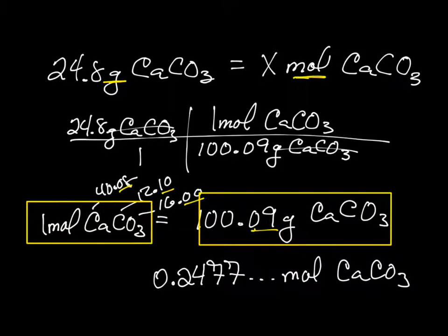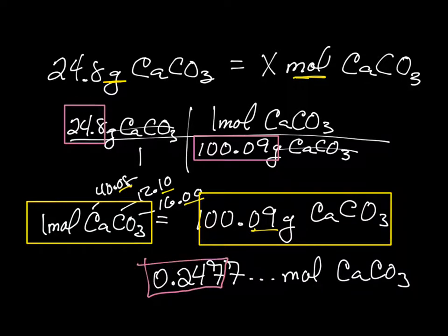And for sig figs, we have three there and five there, so we're going to use the smallest number of significant digits, which is three. So we're going to keep those three, having to round that seven up to an eight. So that means we have 0.348 moles of calcium carbonate. And we can now put that number into our BCA table.